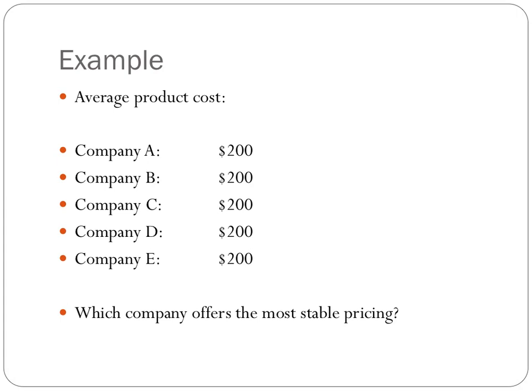And here's where the gambling piece comes in — you could get a much better deal or a much worse deal than you had bargained for. Here, we have listed five different companies and their average product costs for the widget you want to buy. So the question is: which company is going to offer the most stable pricing? Based on the average product cost information alone, we don't have enough information. All we know is that each company offers the product at an average of $200, but we have no understanding of the variability about those $200.